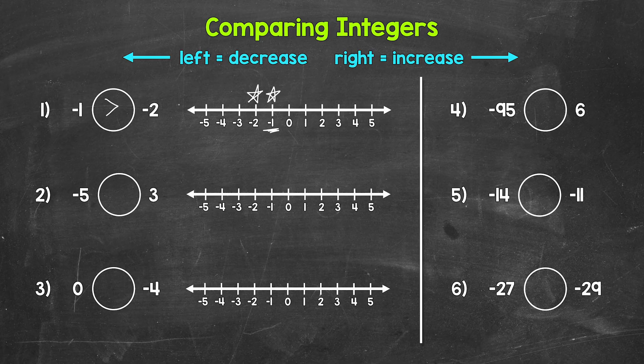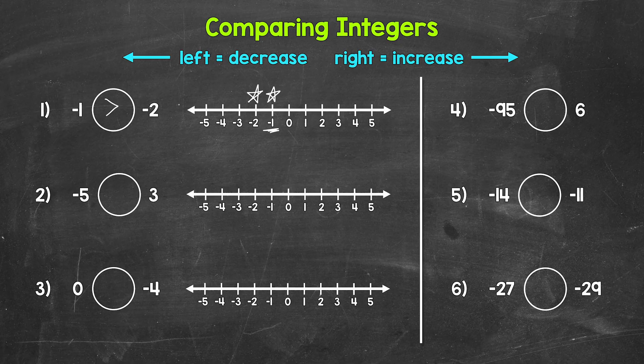Before we move on to number two, I want to mention a couple of things. When we compare two negatives, the one closer to zero is going to be greater — it's further to the right. Also, I like to relate integer comparison to temperature. Is negative one degree warmer or colder than negative two degrees? Negative one is warmer by one degree — it's a higher temperature than negative two. So negative one is greater. Use what works best for you.